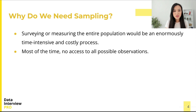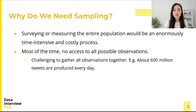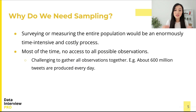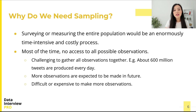Most of the time we do not have access to all possible observations. This could be for many reasons. For example, it may be challenging to gather all observations together. There are about 600 million tweets produced every day — it is unnecessary to look at all of them to determine the topics discussed during the day, nor is it efficient to look at all the tweets to determine the sentiment on each of the topics.